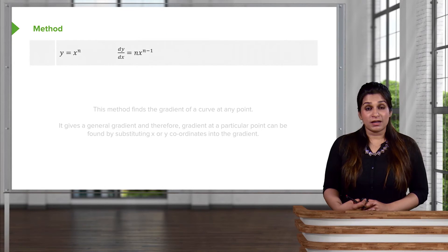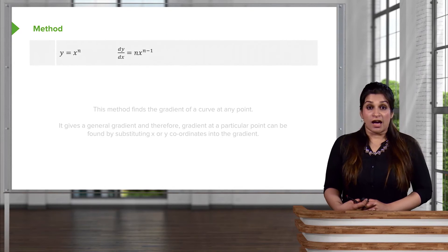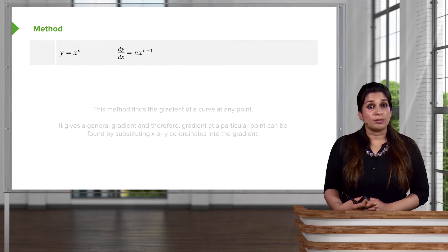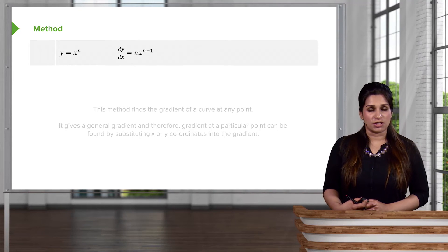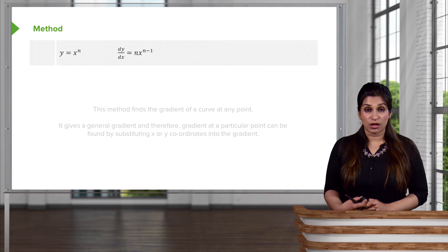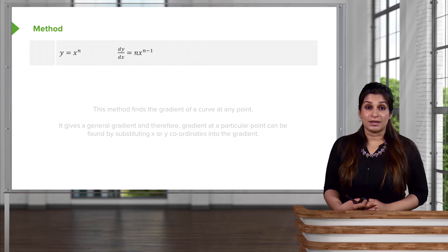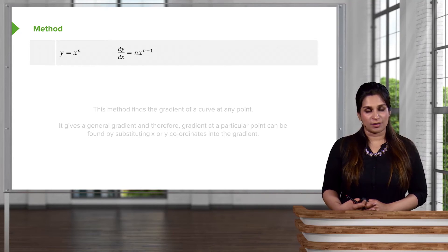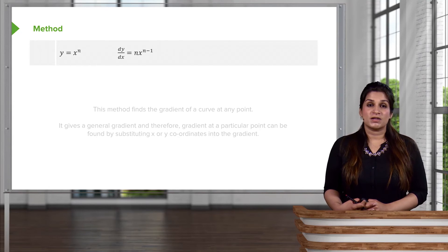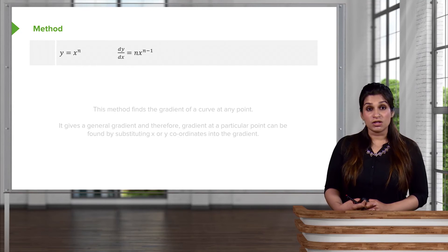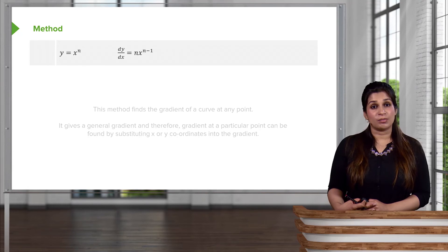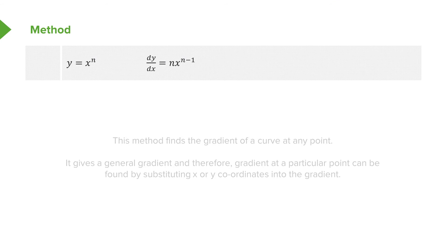Before we start our parametric differentiation calculations, I feel like it's a good point to recap the faster method of differentiation. You've been doing this when we're looking at chain rule, product rule, quotient rule, we've just looked at implicit differentiation, and we're now moving on to parametric. But remember the basics are essential here, that if you have a function y equals x to the power of n, you bring the power down, you decrease the power by one, and then you will get the differential.